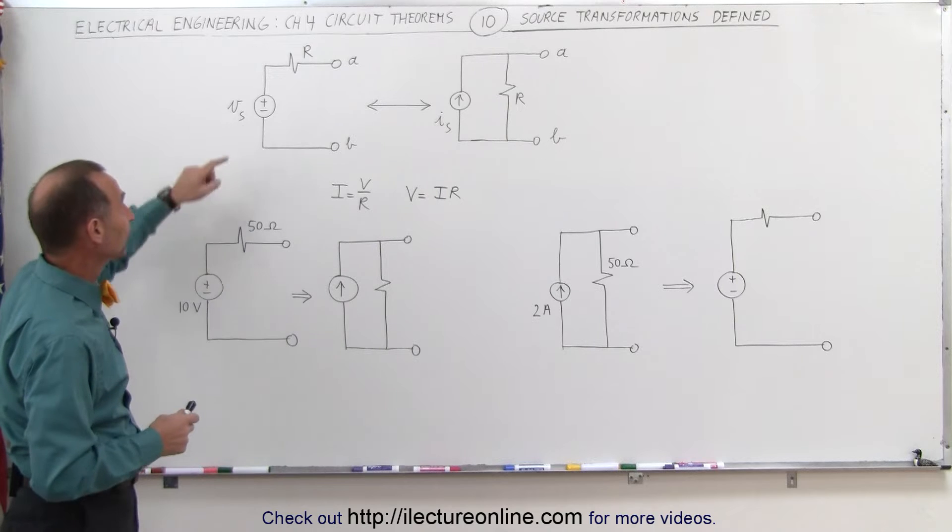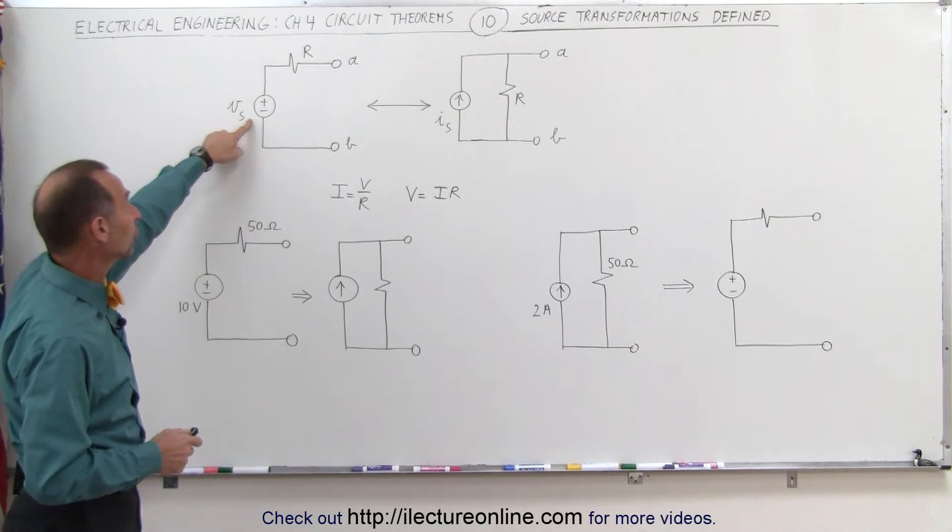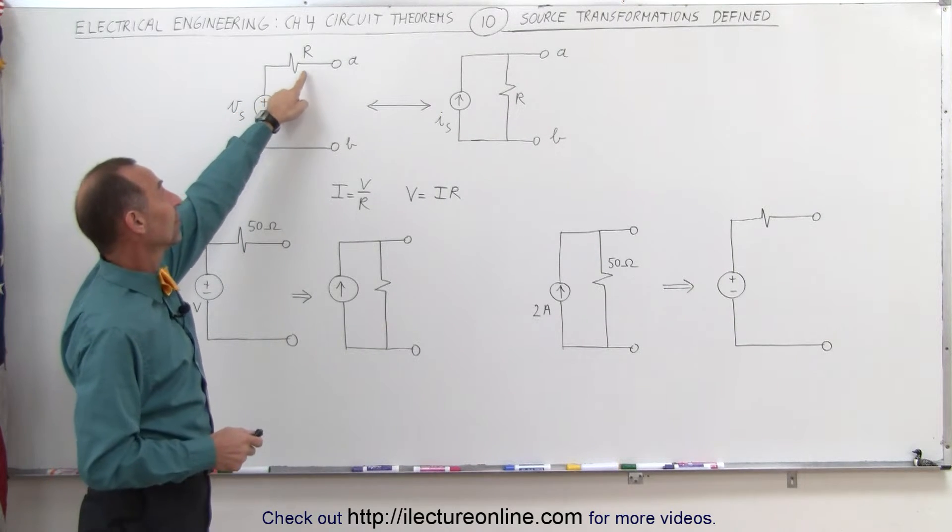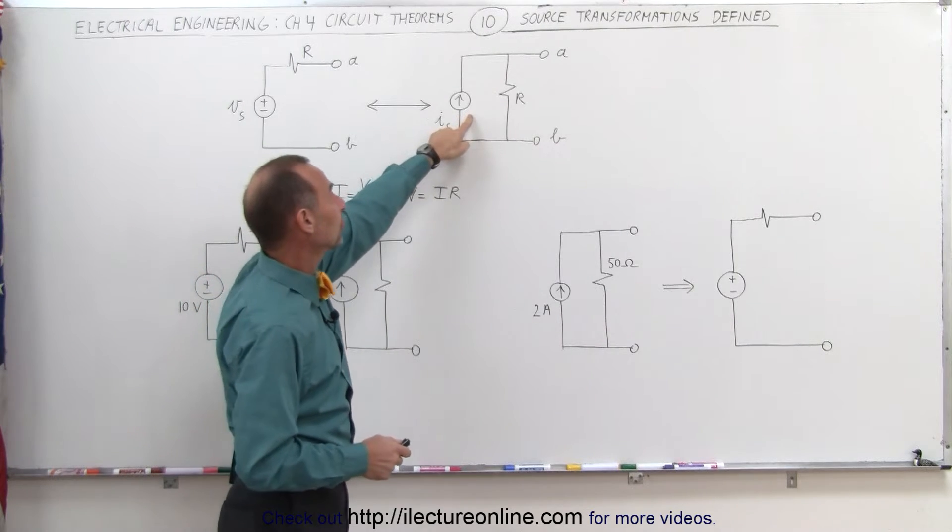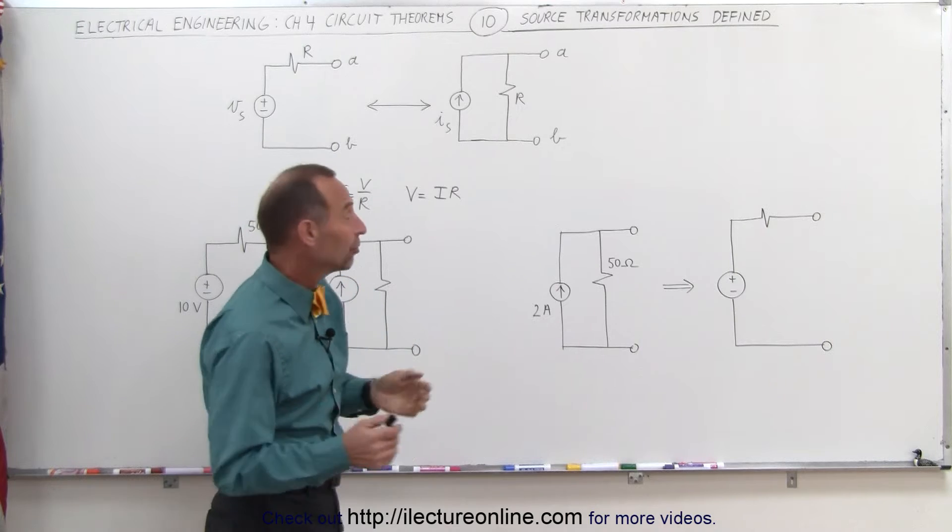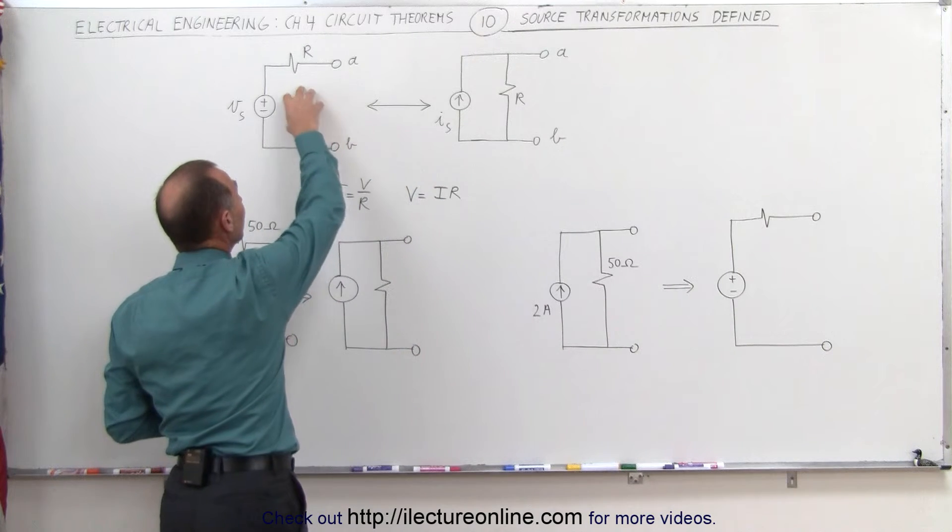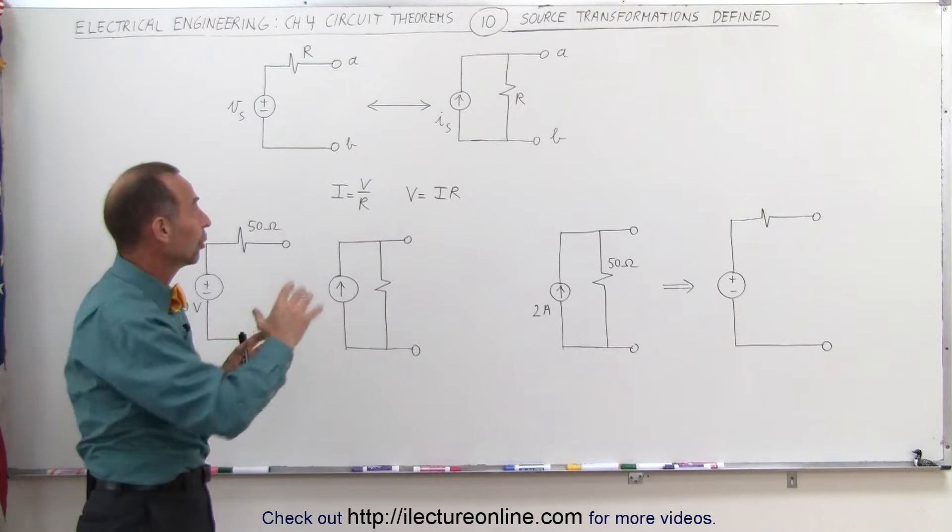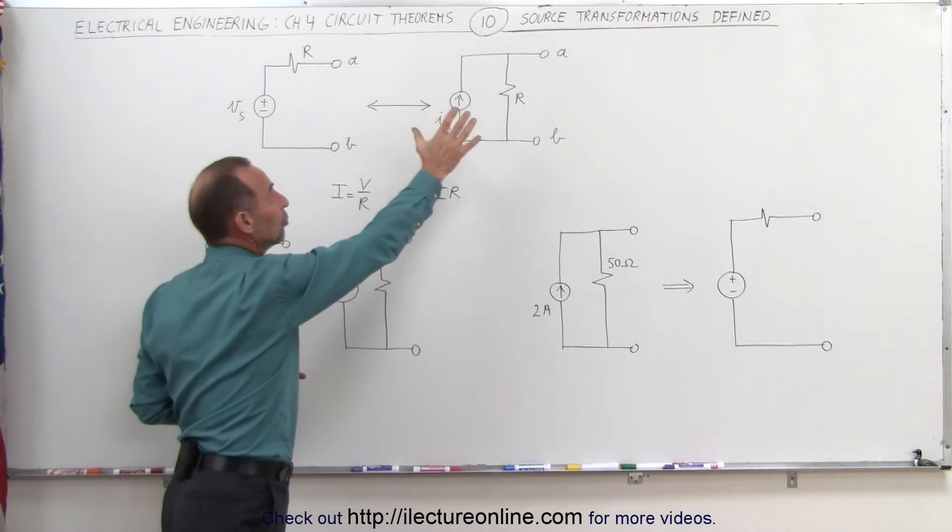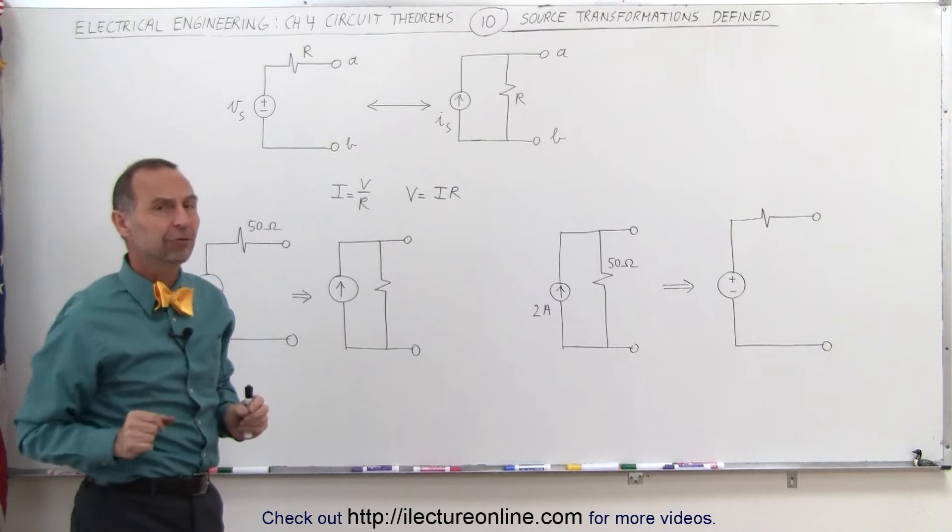For example, we can have a circuit like this that has a voltage source and in series a resistor. Or we can have a current source and in parallel a resistor. It turns out we can very easily go from this circuit to that circuit or at least that portion of a circuit, transforming it into making it look like that back and forth.